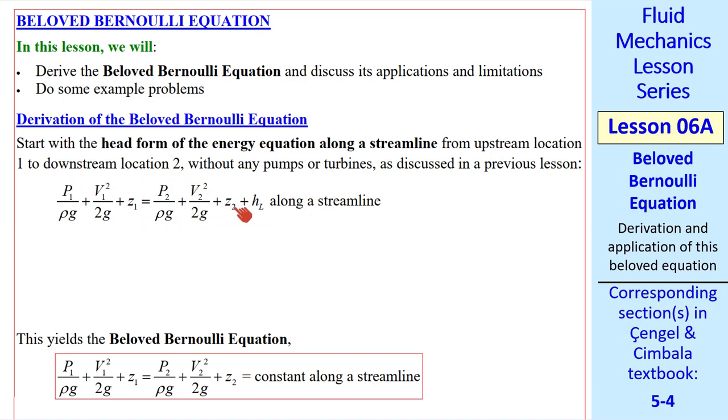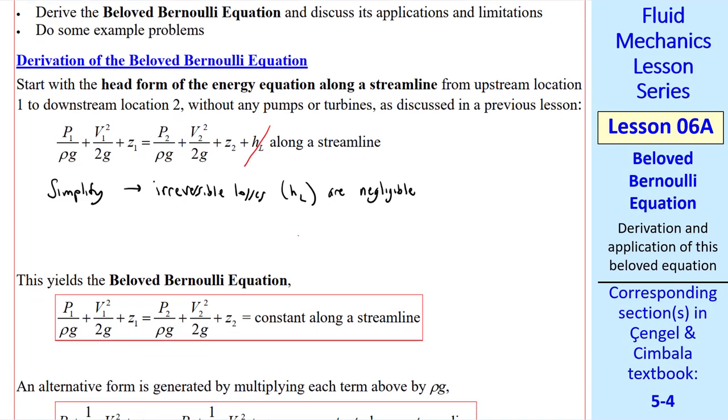This is the form without any pumps or turbines. Now let's simplify further, namely let's let the irreversible losses, the HL term, be negligible. And that's all the derivation we need.